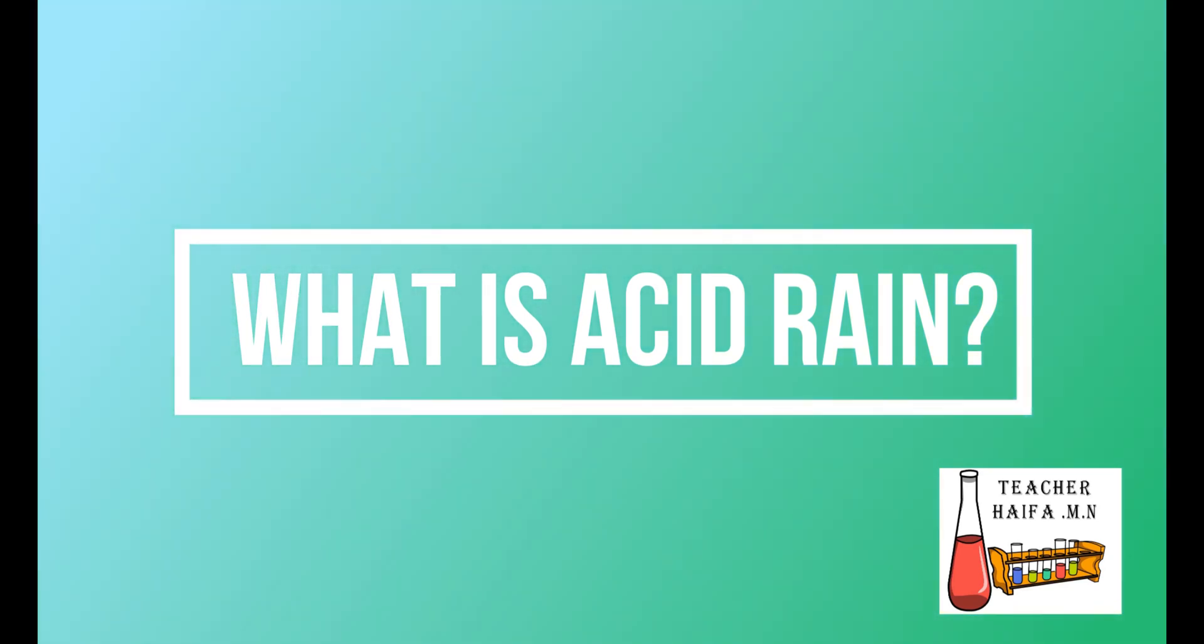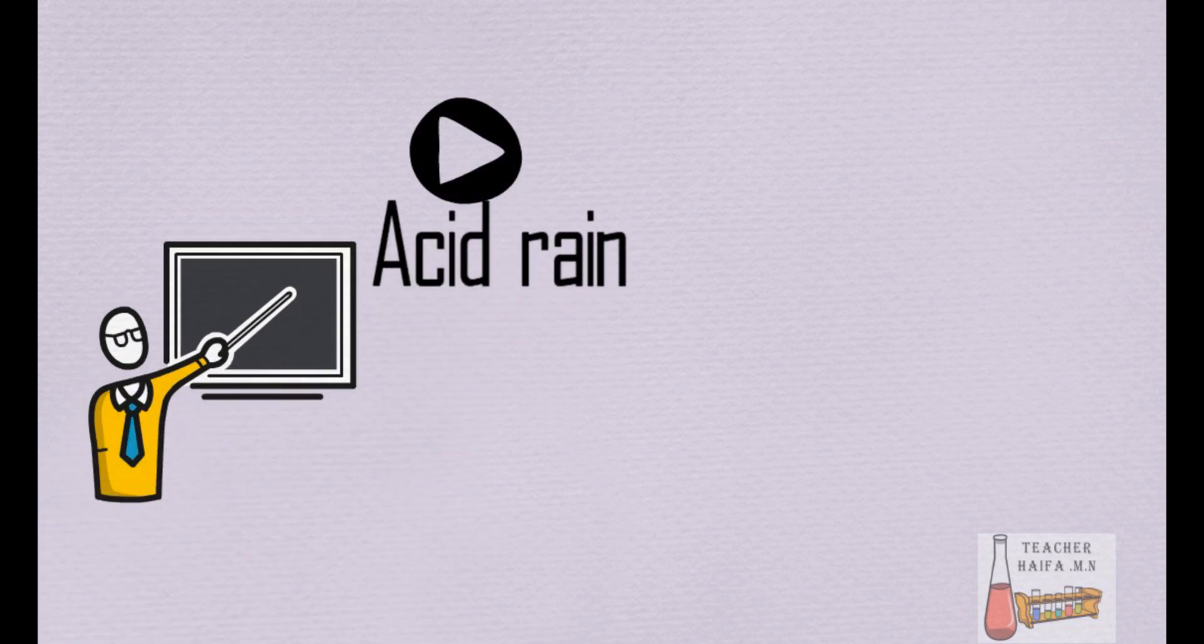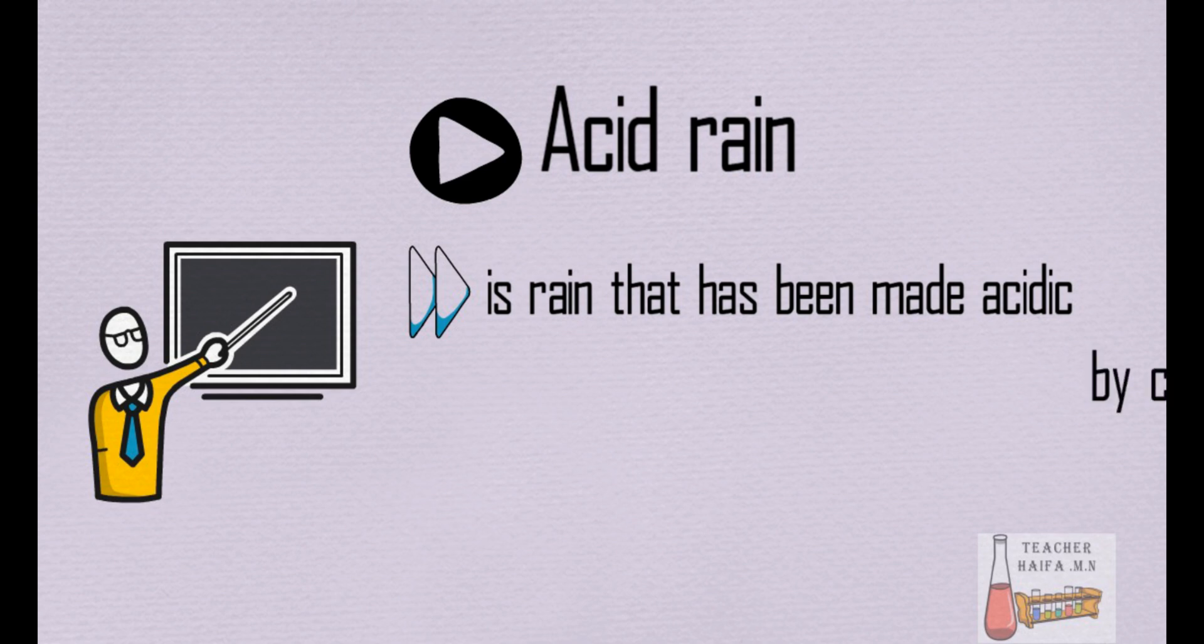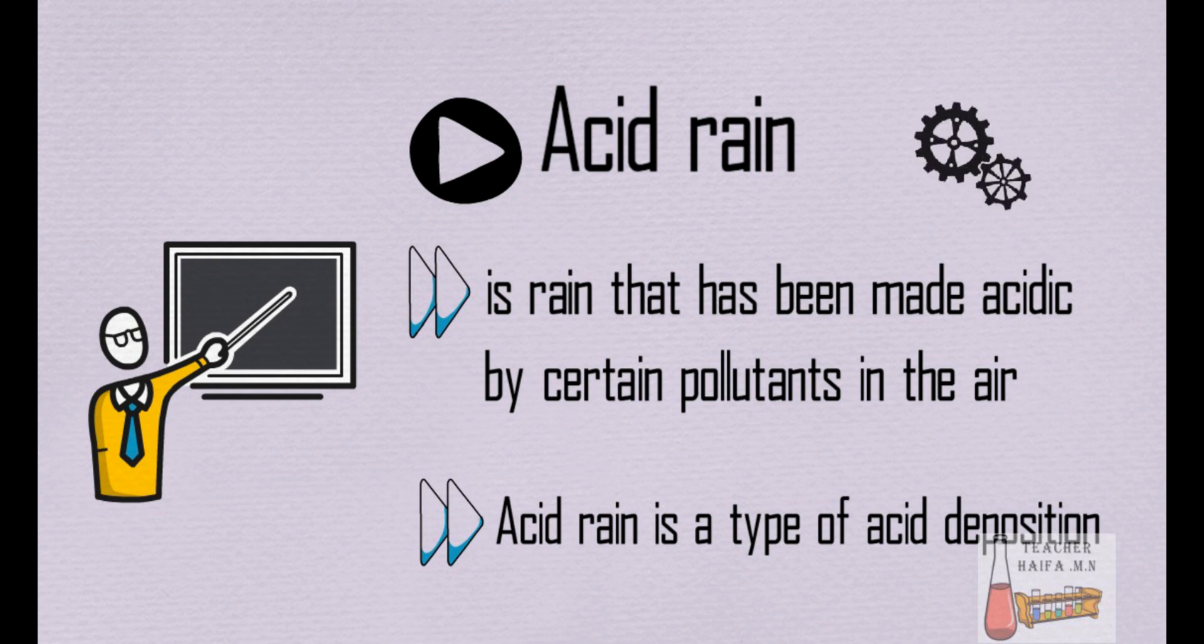Acid Rain. What is acid rain? Acid rain is rain that has been made acidic by certain pollutants in the air. Acid rain is a type of acid deposition.